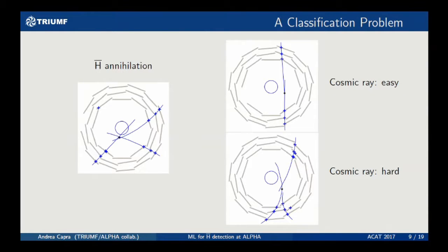This is really a classification problem. On the left we have a typical anti-hydrogen annihilation at the trap wall, with three charged particles arriving at the detector. On the right we have cosmic events. The top example is straightforward — just a straight line with 62 hits identified. The bottom cosmic is much harder: as you can see, it really looks like an annihilation, but it's not — it's a cosmic ray. So it's really a classification problem.